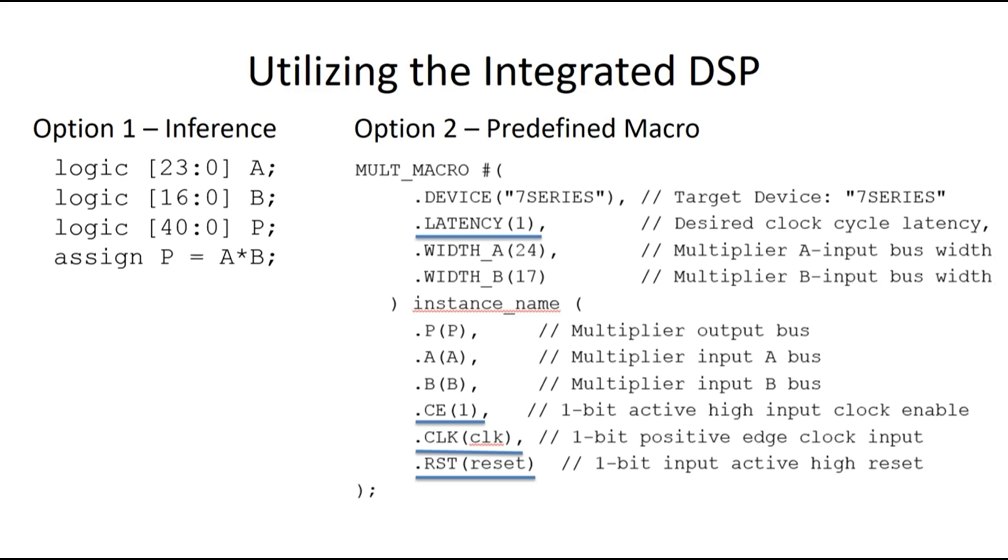And with this setup the output would be delayed one cycle from a given set of input values. But an advantage of this could be that it can allow the system to run at a higher frequency. And there are also macros for other types of operations such as a multiply accumulate operation for instance.